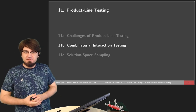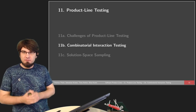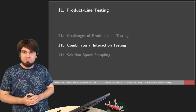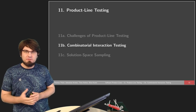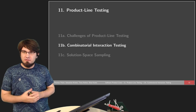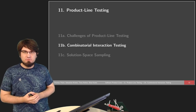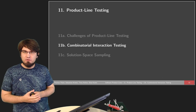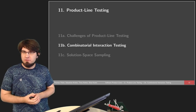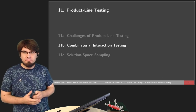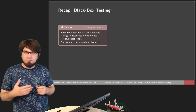Welcome back to the second part. I already told you something about sample-based testing, and now we want to look in more detail at how we can derive such samples. We're talking specifically about combinatorial interaction testing, which I will explain in a minute.